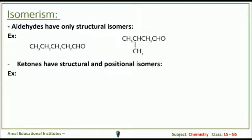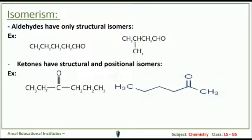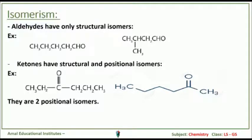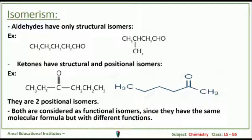Ketones have structural and positional isomers, such as CH3-CH2-CH2-CO-CH3 where the double bond is on the second carbon. The isomer CH3-CH2-CH2-CH2-CO-CH3 has the carbonyl group on a different position. They have different positions of the functional group.